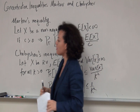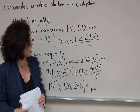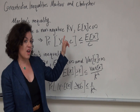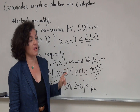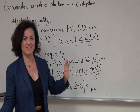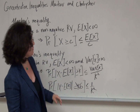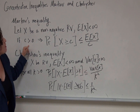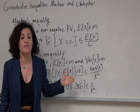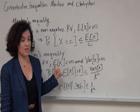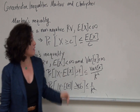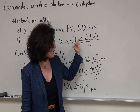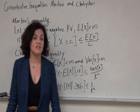Here's Markov's inequality. We have a non-negative random variable x with finite expectation — it's very important to check that, as things can go horribly wrong if you don't. For any constant c greater than zero, the probability that x is greater than c is bounded above by the mean divided by c.